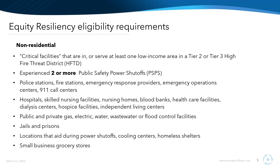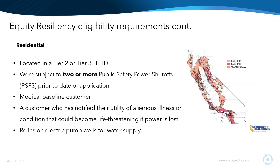Buildings that qualify are either in or serve at least one low-income area in a Tier 2 or Tier 3 high-fire threat district. They have experienced at least two or more public safety power shutoff events. These buildings include police and fire stations, emergency first response providers, hospitals — just a few examples. We are going to be sending these slides out after the webinar for you to take a closer look.